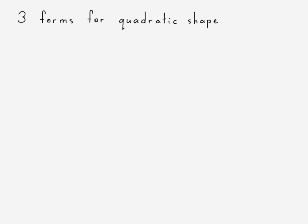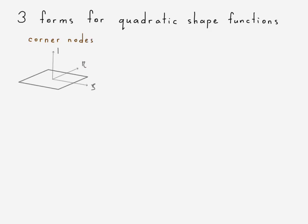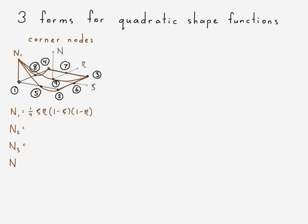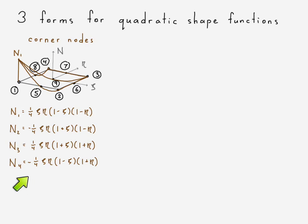There are three forms for the shape functions in a nine-node quadratic element. First, we have our corner nodes. For node one, notice we write it with xi and eta out front, meaning that any time xi or eta are zero the shape function will be zero, as it must be. Then we have something very similar in form to the linear version: one minus xi, one minus eta. We fill out the other three shape functions for the remaining corner nodes. We occasionally include a minus sign to ensure the shape function is positive at its node — for node two, where xi equals plus one and eta equals minus one.